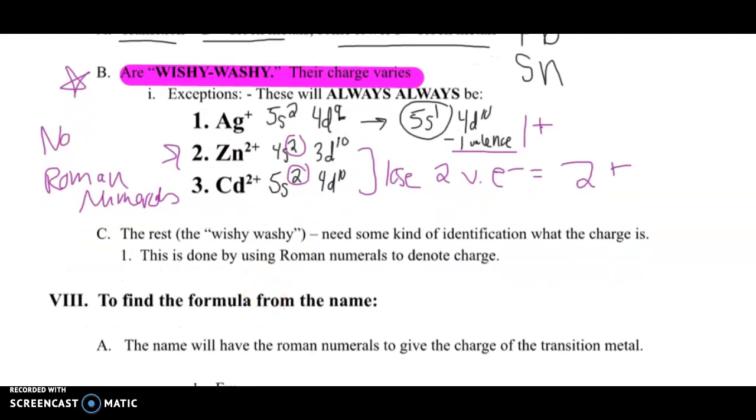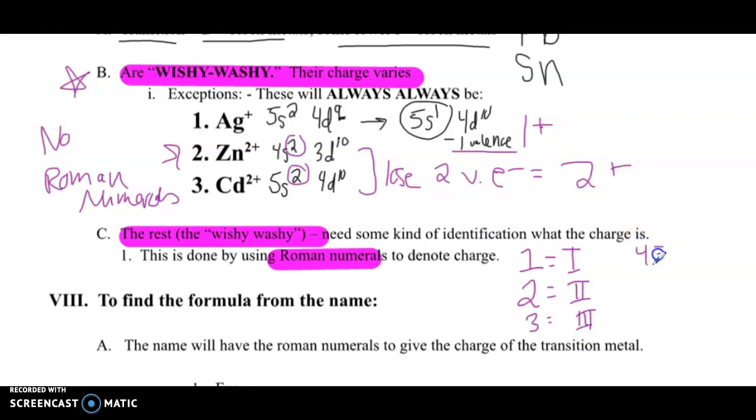So the rest are all wishy-washy, which means that they can form different charges based on different situations, and we need some kind of identification of what that charge is. So we're going to do this using Roman numerals. Write them down again if you don't remember. But number 1, Roman numeral is just one line. Number 2, the Roman numeral is two lines. Number 3, Roman numeral is three lines. Now I'm going to skip 4 for a second. I'm going to go to 5. 5 is a V. So Roman numeral V is 5. And when we write 4, we say it's 1 less than 5. So we say IV. With that line written in front of the 5, it means 1 less than 5, which is 4.